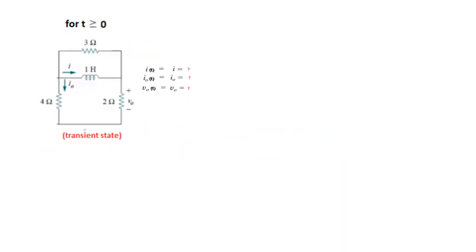Now we're in transient mode, for T greater than 0. We need to find I(T), I₀(T), and V₀(T). The formula for I(T) is I(T) equals I₀ times e raised to the power negative T over tau. There are two unknowns: the initial value I₀ and tau. We've already calculated I₀ from the previous slide, so we'll plug that value in.